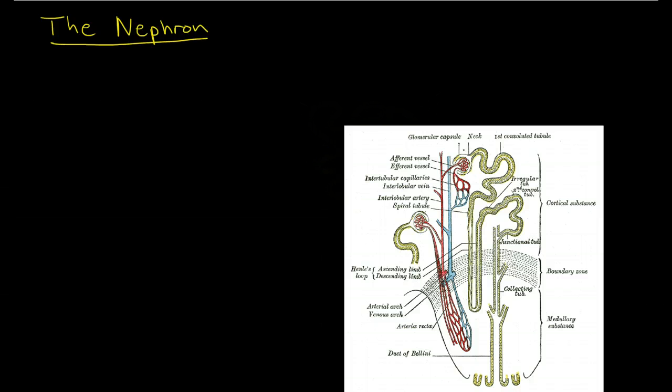So here we have a picture of the nephron taken from Gray's Anatomy. The whole process starts here at the glomerulus. And here at the glomerulus, we have an artery running in, which is the afferent arteriole. And then we have an efferent arteriole coming out. And the efferent arteriole divides up into a plexus of capillaries.